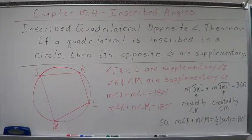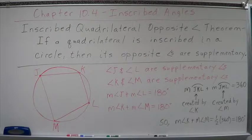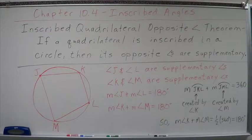A quadrilateral is a four-sided polygon. If a quadrilateral is inscribed in a circle, that means its corners are on the circle and its sides create chords inside the circle. Then its opposite angles are supplementary. Opposite means they're across from each other — that's absolutely correct.